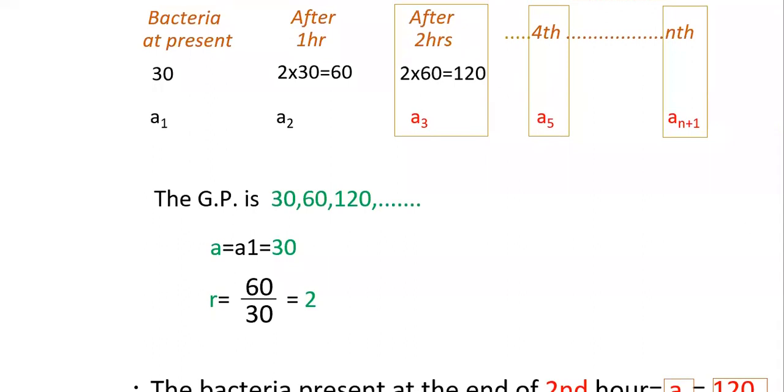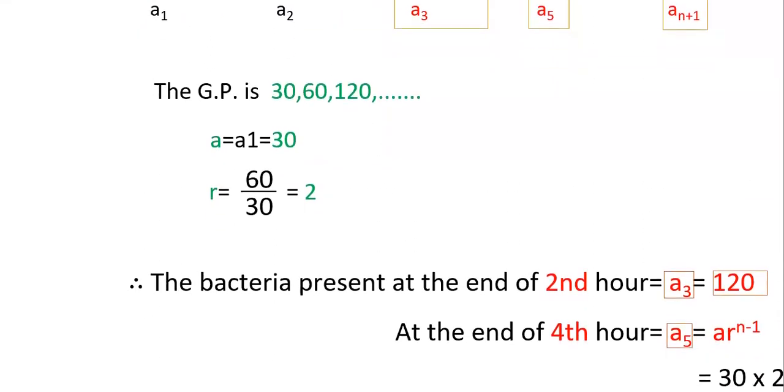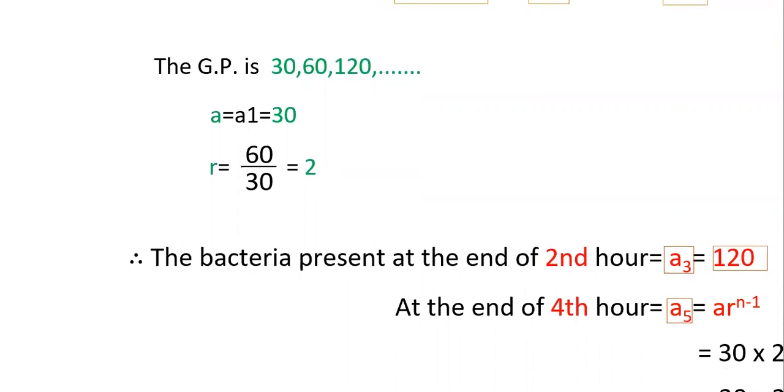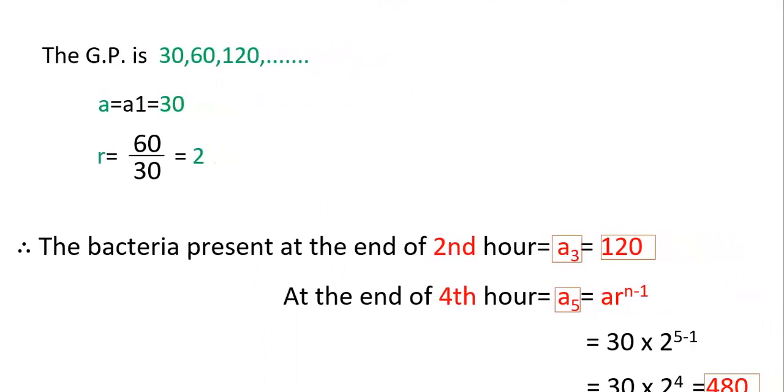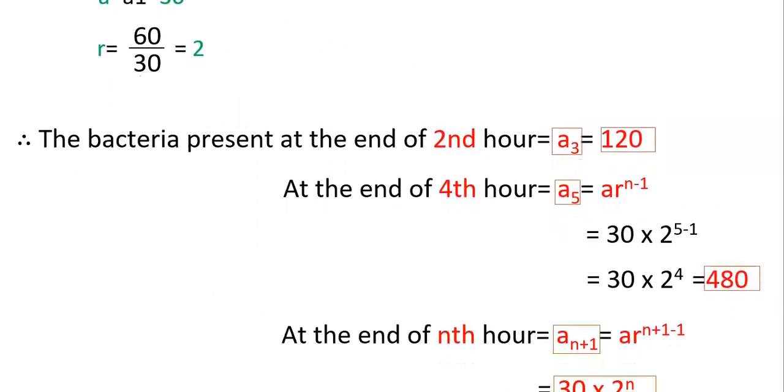Now a₅. We know that the term in GP can be found using this formula: a times r to the power of n minus 1. a₅ at the end of the fourth hour equals a times r to the power of n minus 1, that is 30 into 2 to the power of 5 minus 1, that is 30 into 2⁴, which equals 480.